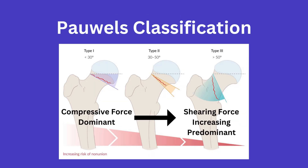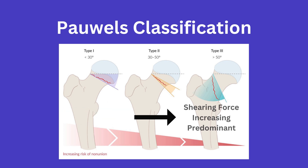This classification has three types. Type 1 is less than 30 degrees — with this one, the compressive forces are dominant. Type 2 is between 30 and 50 degrees. Finally, type 3 is greater than 50 degrees, and the shearing force becomes more predominant as the inclination increases.